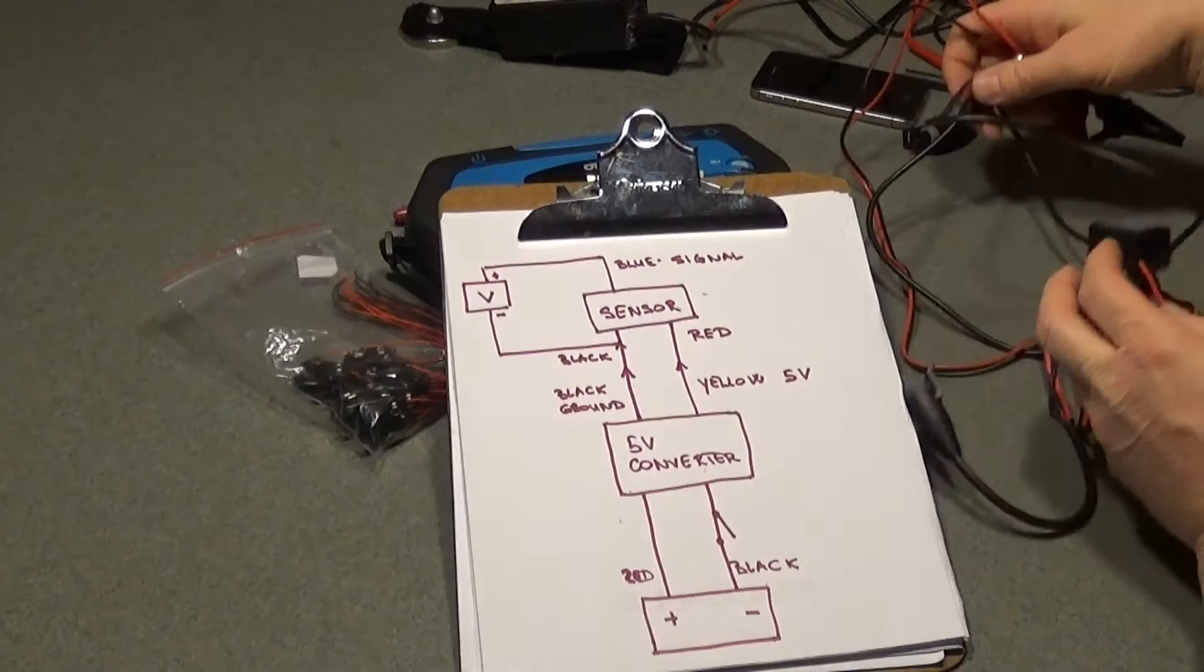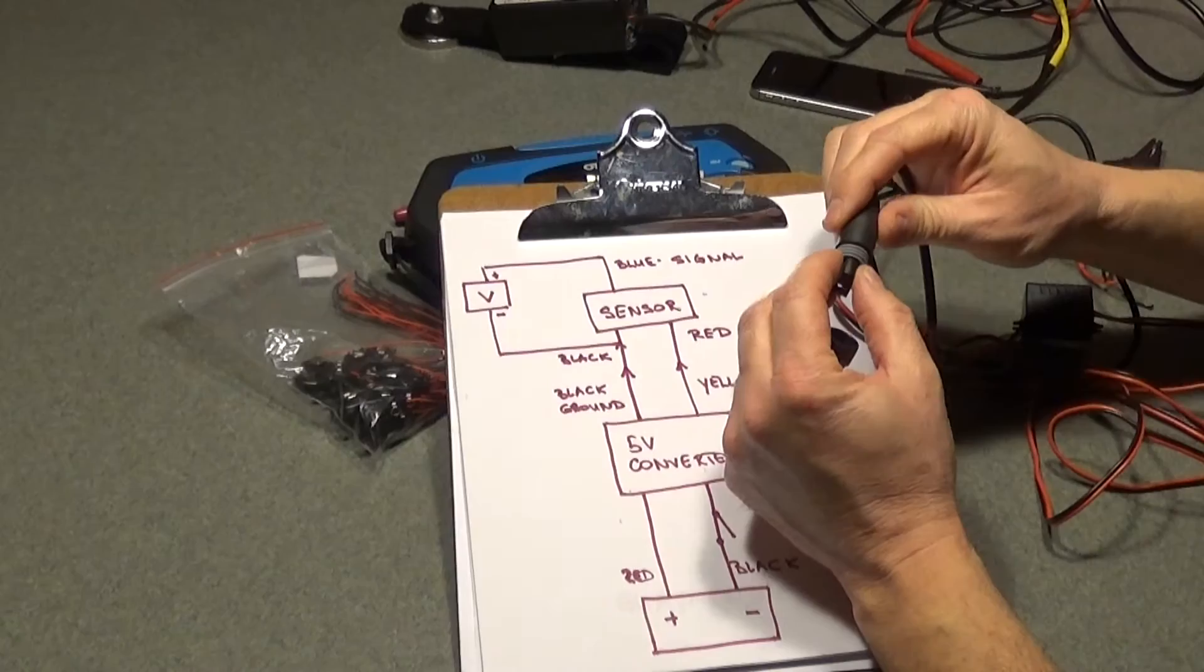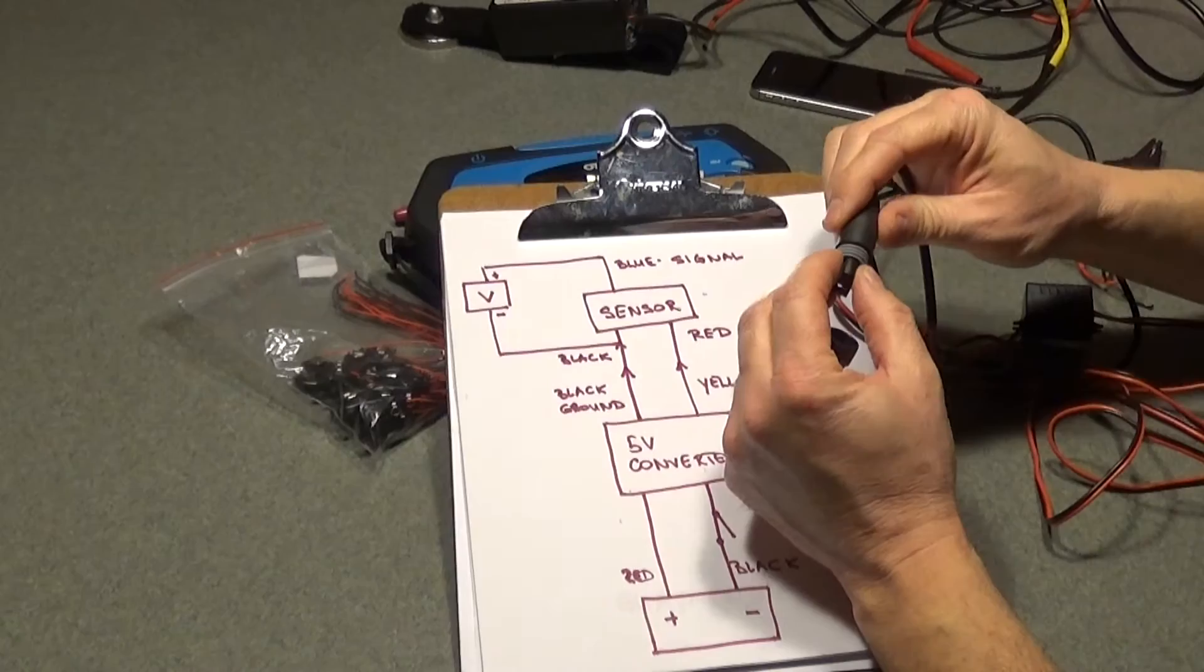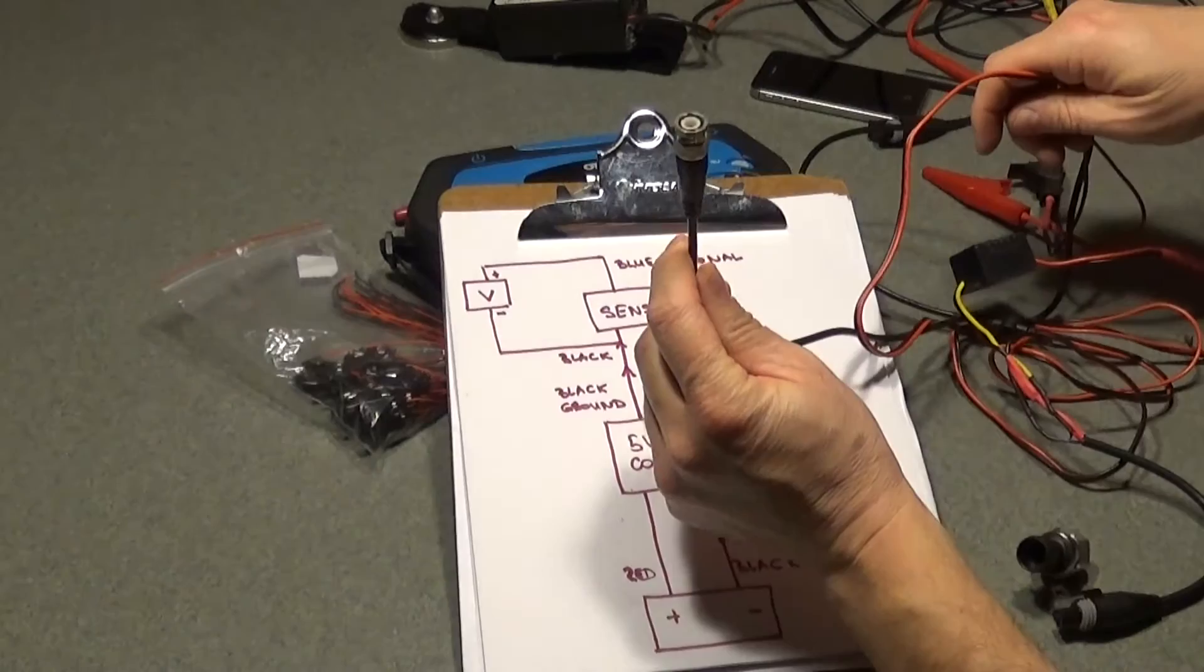So basically what you're going to need is an in-cylinder pressure transducer. This is a 300 psi. You're going to need a harness. Most of the time they come together with a harness anyway. I will leave a link in the description to all these parts that you're going to need. So you're going to need a harness, a pressure transducer, a 5 volt converter. And then you will need some kind of a lead. Like on this one I use a BNC lead so I can hook it up to my lab scope.